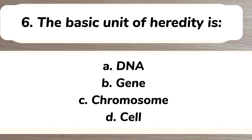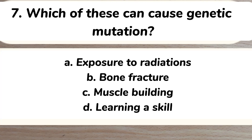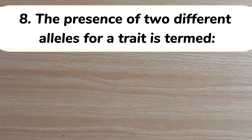Answer: B) gene. Number seven: which of these can cause genetic mutation? A) exposure to radiations, B) bone fracture, C) muscle building, D) learning a skill. Answer: A) exposure to radiations. Number eight: the presence of two different alleles for a trait is called A) homozygous, B) homologous, C) heterozygous, D) diploid.